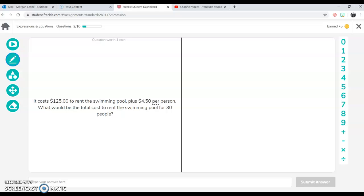It costs $125 to rent a swimming pool plus $4.50 per person. Per is important. They have it underlined for a reason. They have it saying for each. So $4.50 for each person. What would be the total cost to rent the swimming pool for 30 people?